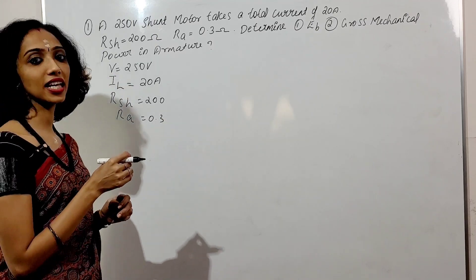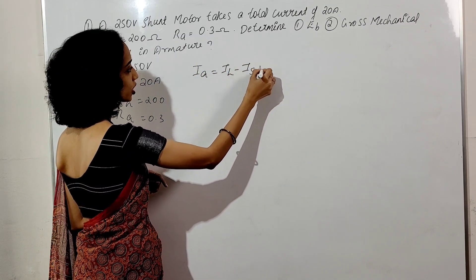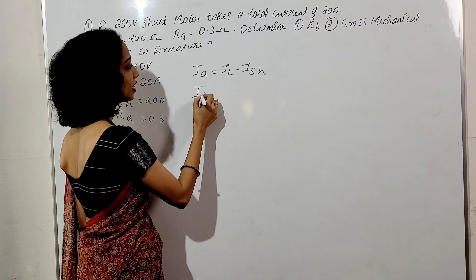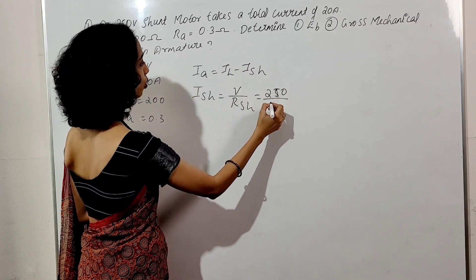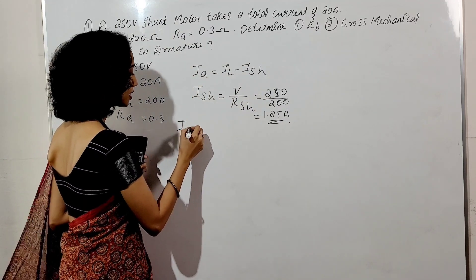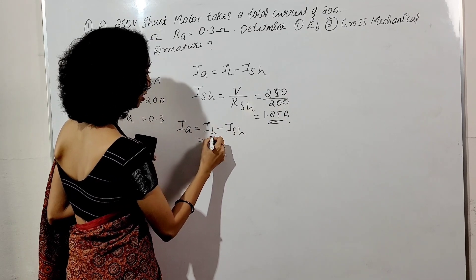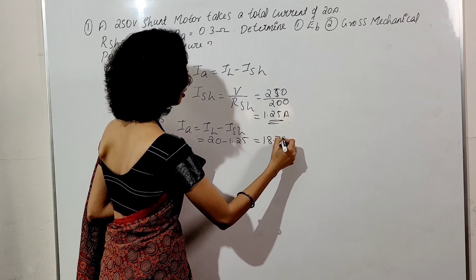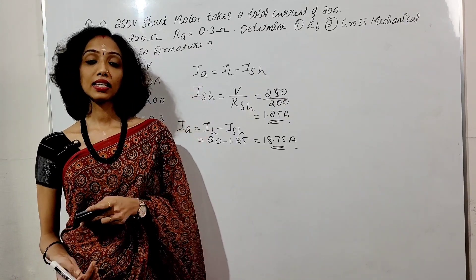In the case of a DC motor, IA is equal to IL minus ISH. ISH is equal to V divided by RSH, which is 250 divided by 200, giving 1.25 ampere. So IA is equal to IL minus ISH, that is 20 minus 1.25, which equals 18.75 ampere.